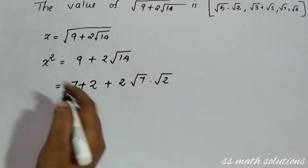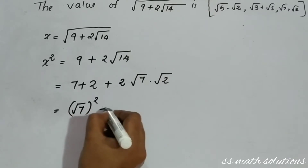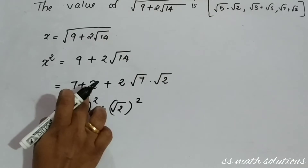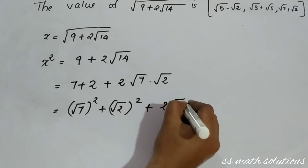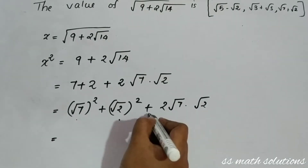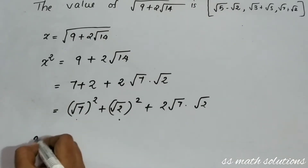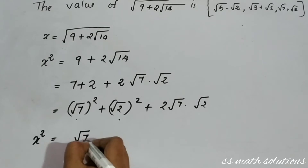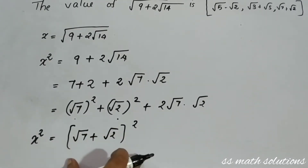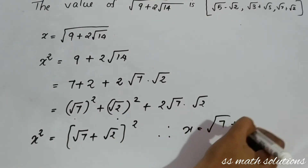We can write this as (√7)² + (√2)² + 2·√7·√2. This is in the form a² + b² + 2ab, which equals (a + b)². So x² = (√7 + √2)², therefore x = √7 + √2.